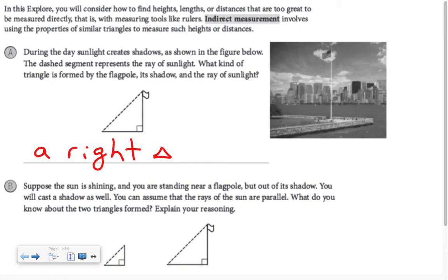If the sun is shining and we are standing near a flagpole but out of its shadow, we will cast a shadow as well. We can assume that the rays of the sun are parallel. So what do we know about the two triangles formed?